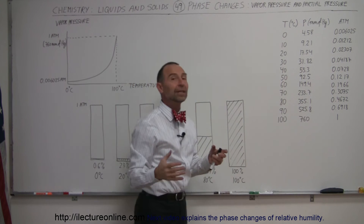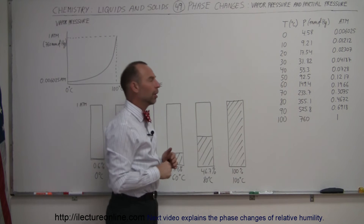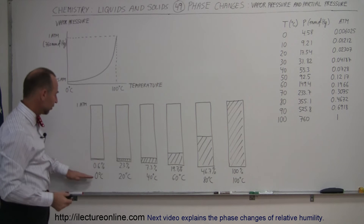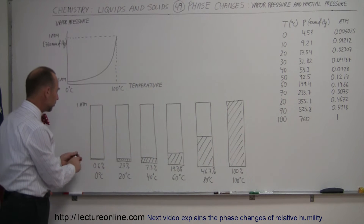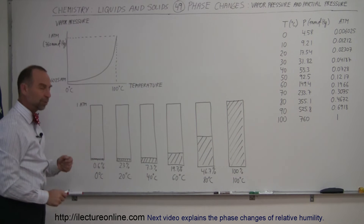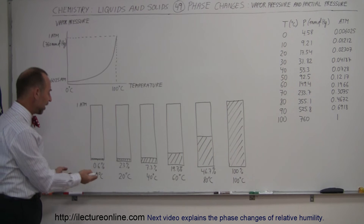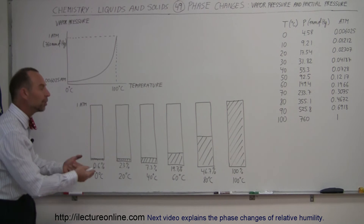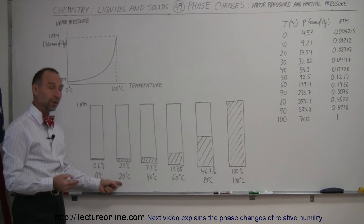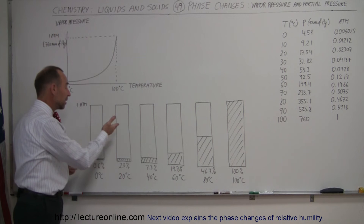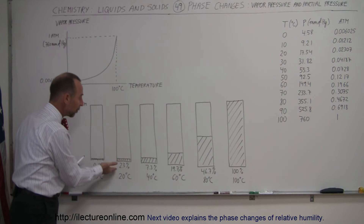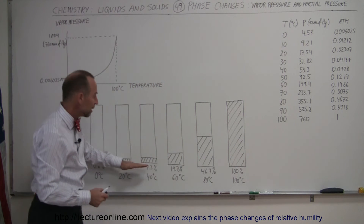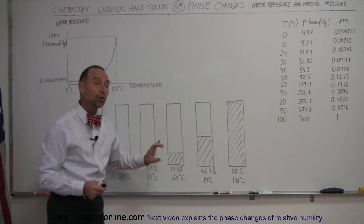Now 4.2 percent of the atmospheric pressure is due to the vapor pressure of vapor in the atmosphere. To depict that: at zero degrees centigrade the total vapor pressure in the atmosphere cannot exceed 0.6 percent — if there's 0.6 percent vapor pressure, it is fully saturated and no additional water vapor will end up in the atmosphere. If the temperature increases to 20 degrees centigrade, it reaches equilibrium at 2.3 percent of atmospheric pressure. At higher and higher temperatures, the amount of vapor you can have in the atmosphere increases as a percentage of total atmospheric pressure.